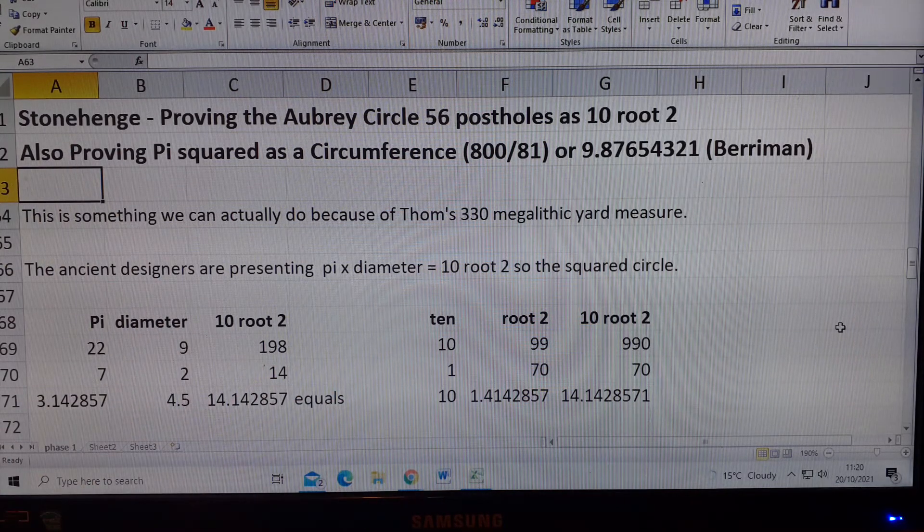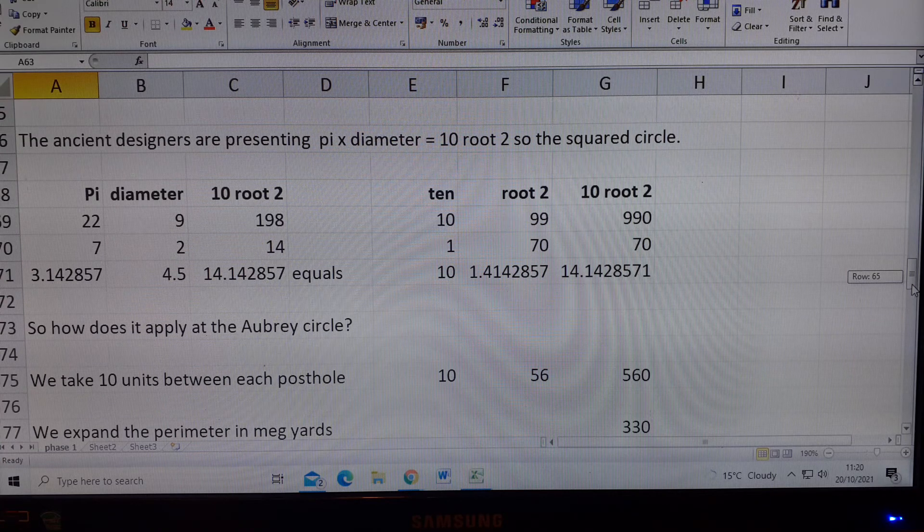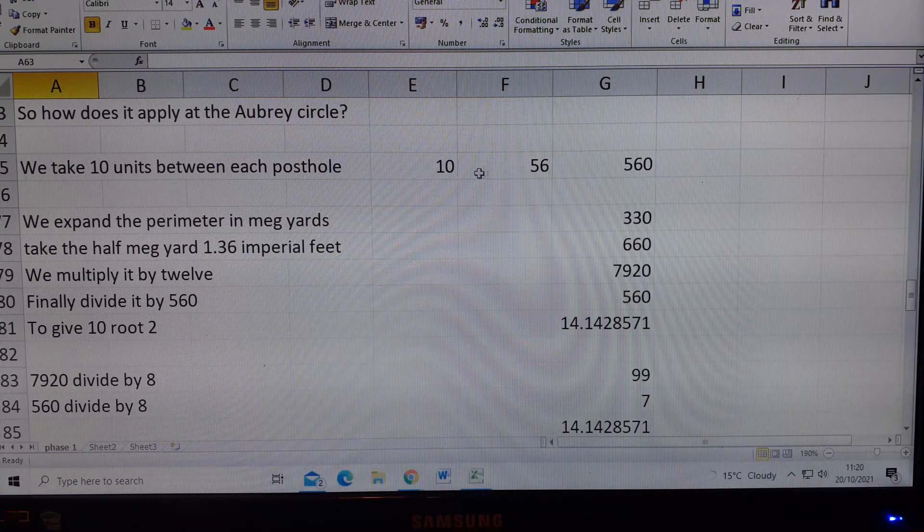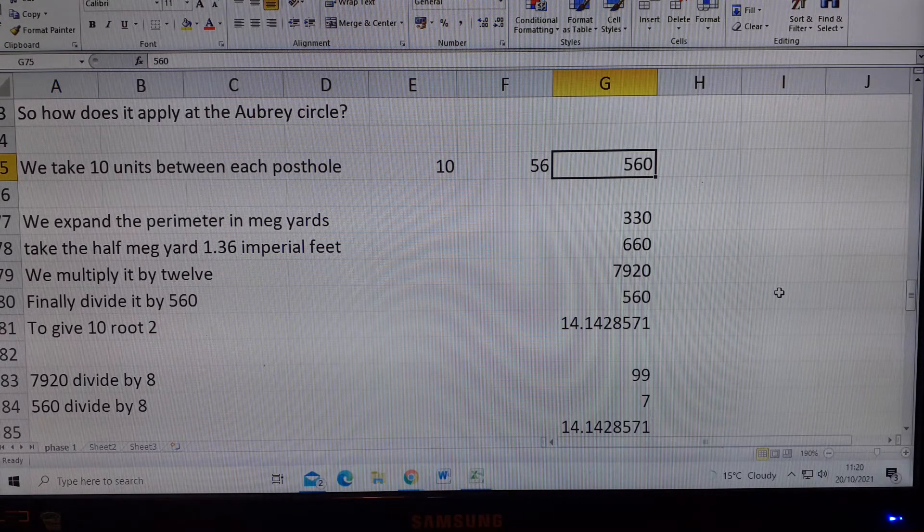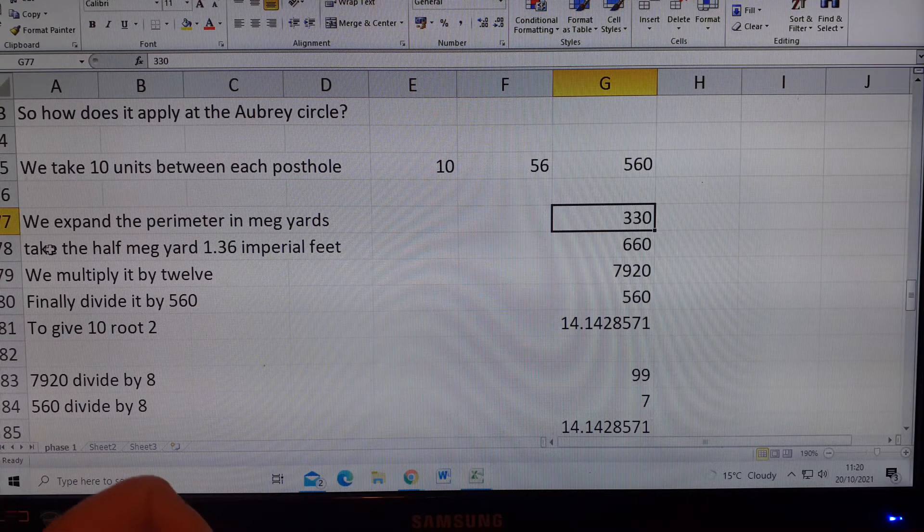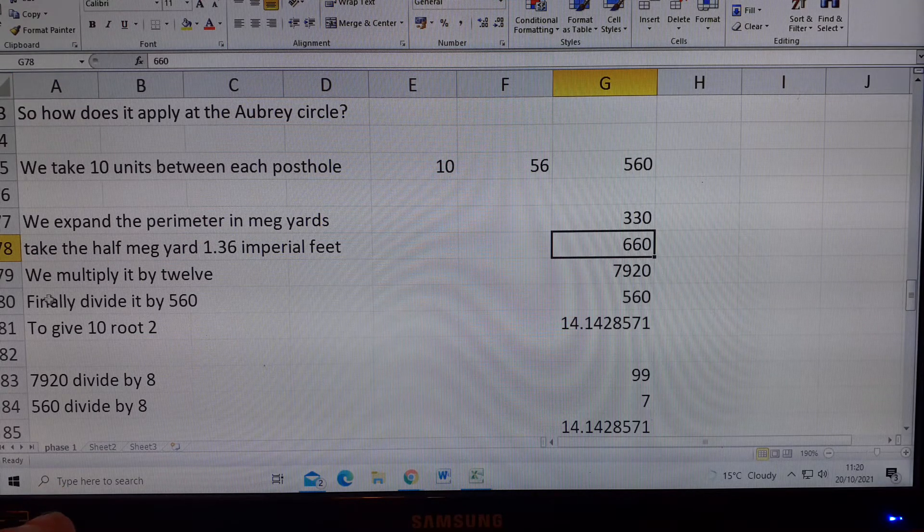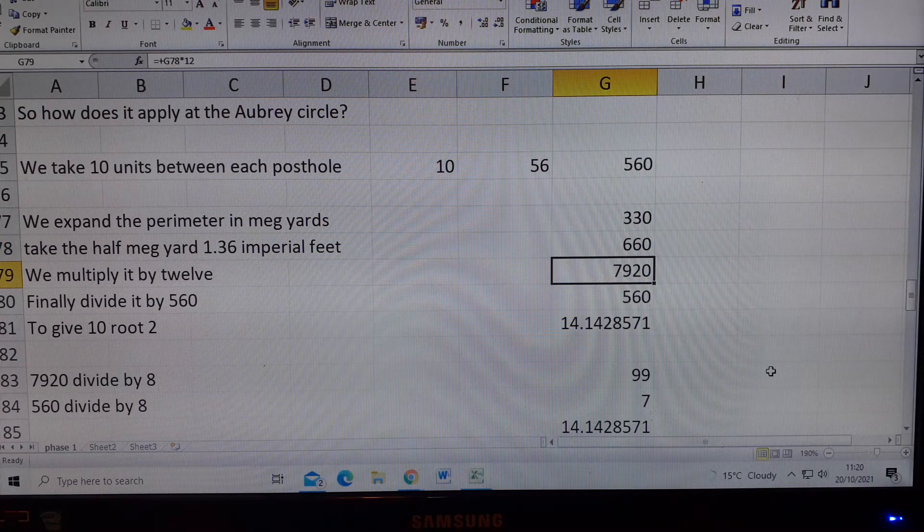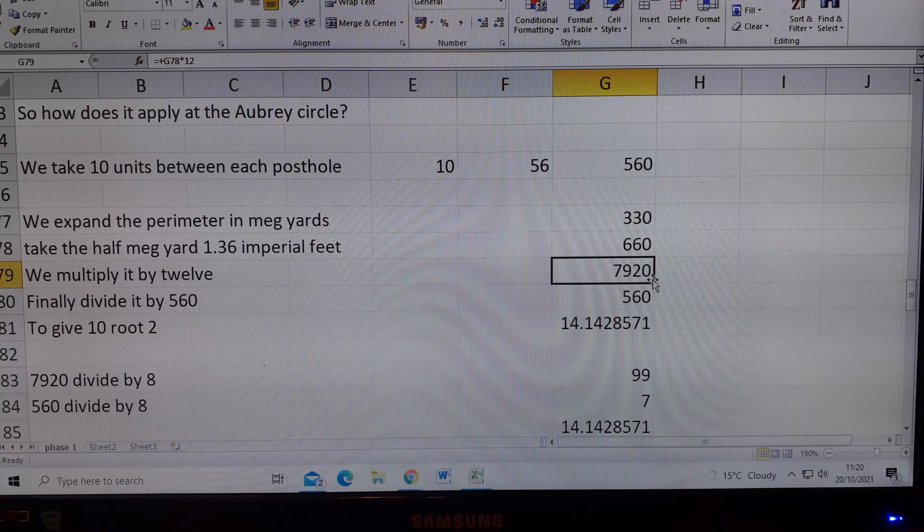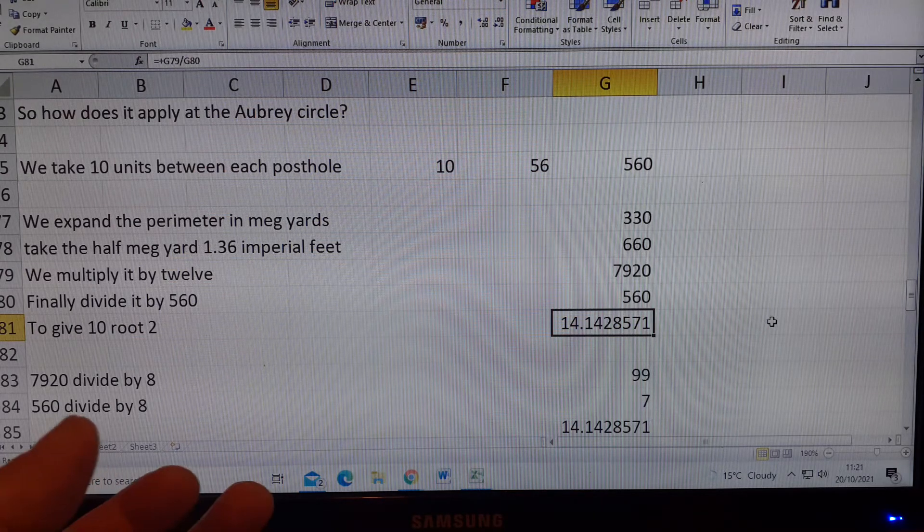But they're not doing it like that at the Aubrey Circle. It's expanded. The design is expanded at the Aubrey Circle. So how does it apply at the Aubrey Circle? We take 10 units between each post hole, so we've got 560 units. Then we expand the perimeter, which is in megalithic yards, 330 megalithic yards. Take half the megalithic yard, which is 1.36 imperial feet. That gives 660 units. Then multiply it by 12. We find we're using a unit of 1.36 inches. We get 7920 units divided by 560, and we get 14.142857. It's dead easy.